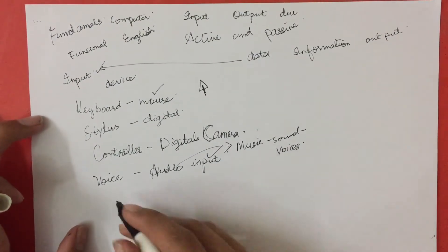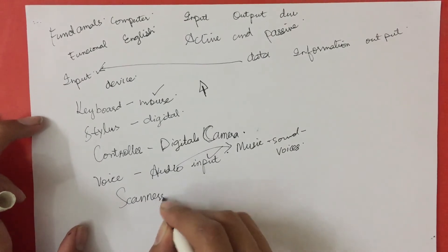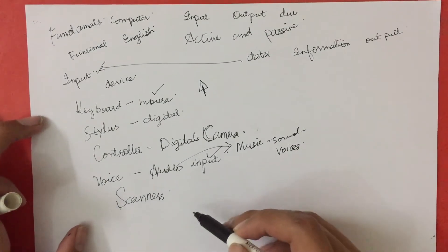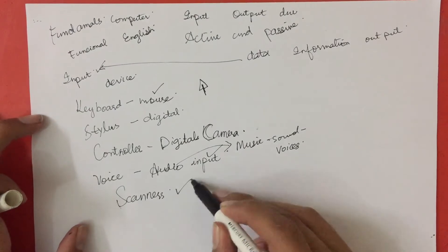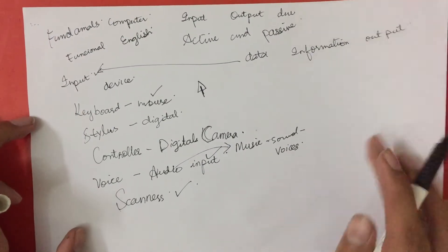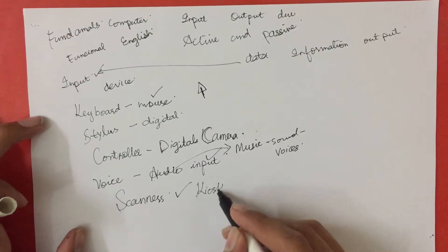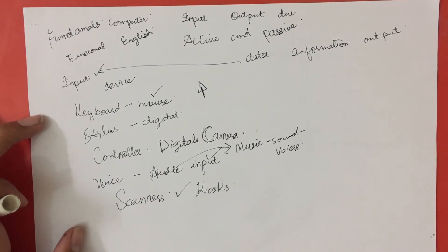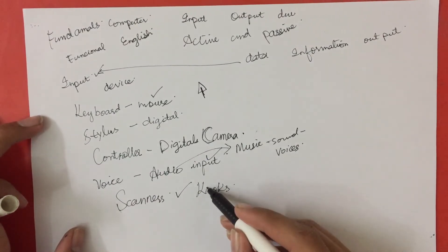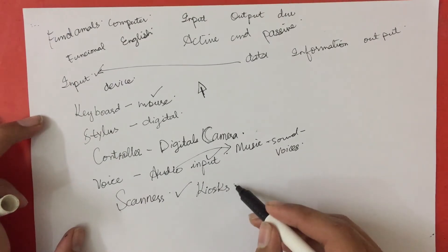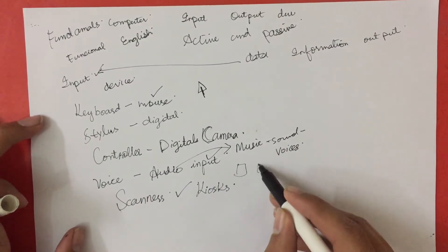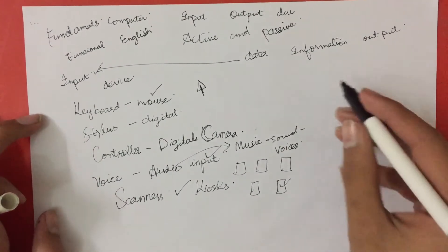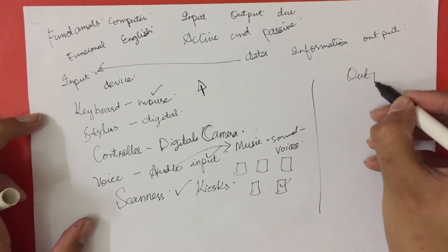We also have scanners — devices which read the data from a real document, saving you time by scanning it and providing you with useful information. We also have kiosks, which are stationary computers kept outside shopping malls or in markets. They help you identify things you want to buy and have a list of icons where you click, input data, and then receive an output.